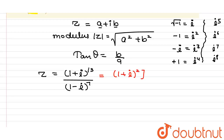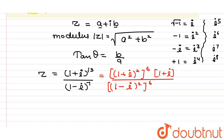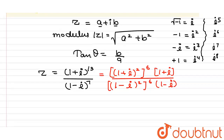We rewrite (1+i)^13 as (1+i)^12 × (1+i), which is [(1+i)²]^6 × (1+i). Similarly, (1-i)^7 = [(1-i)²]^6 × (1-i). Now we expand (1+i)² using a² + b² + 2ab, and (1-i)² using a² + b² − 2ab.